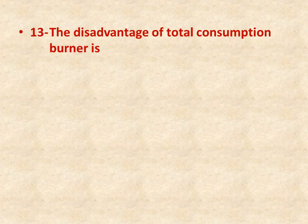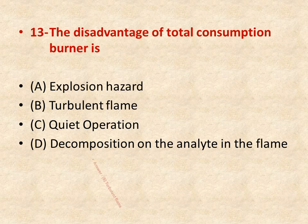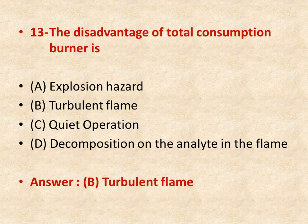Question number thirteen: the disadvantage of total consumption burner is — options: A is explosion hazard, B is turbulent flame, C is quiet operation, D is decomposition of the analyte in the flame. The right answer is B — the turbulent flame.